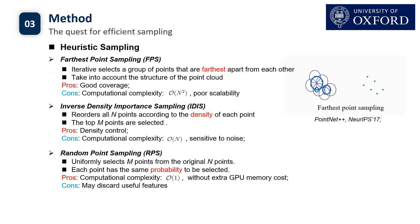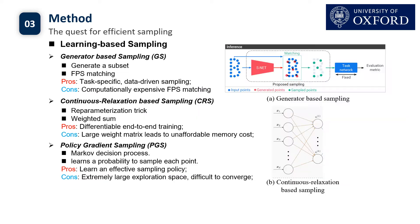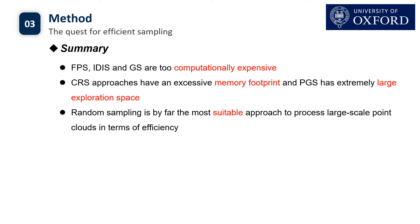To find a suitable sampling method for large-scale point clouds, we analyze and list the pros and cons of existing sampling approaches, including three heuristic and three learning-based sampling approaches: farthest point sampling, inverse density sampling, random sampling, generator-based sampling, continuous relaxation-based sampling, and policy gradient sampling. Please refer to our paper for detailed analysis. To summarize, we found that random sampling is by far the most suitable approach in terms of efficiency.